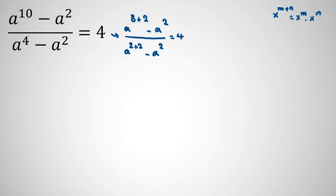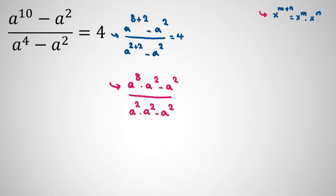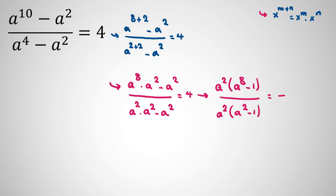Applying that rule, it becomes (a^8 · a² - a²) / (a² · a² - a²) = 4. In the next step we factor out a²: the numerator becomes a²(a^8 - 1) and the denominator becomes a²(a² - 1), giving a²(a^8 - 1) / a²(a² - 1) = 4.